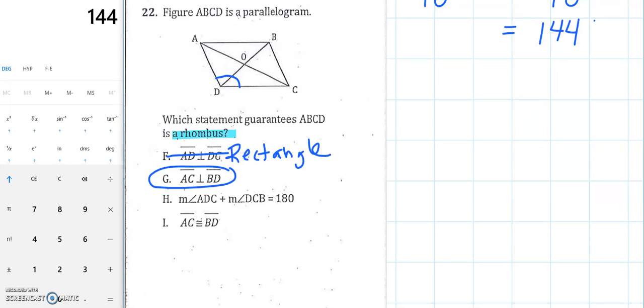H, angle ADC from A to D to C plus the measure of angle DCB, so this angle here, equals 180. Well, consecutive angles like that equaling 180, that's any parallelogram, and we already know it's a parallelogram, so that's not going to be it. That's gonna be working for any parallelogram. That's not gonna prove it's a rhombus.